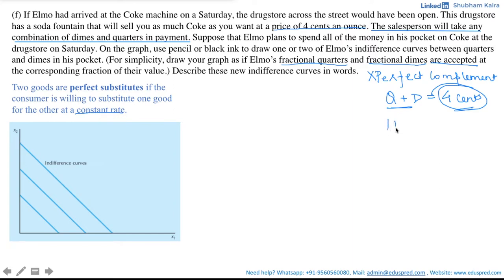We know that one dime is equal to 10 cents and one quarter is equal to 25 cents and he only has dimes and quarters in his pockets. So, we are not going to consider any other denomination. Now, if he wants to exchange a quarter in terms of dimes, the rate at which he would be willing to substitute would be ratio of quarters to dimes.